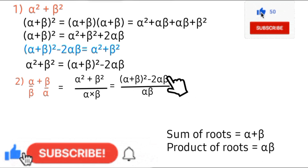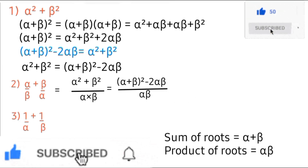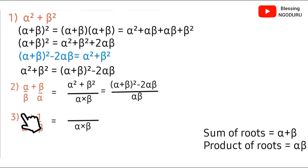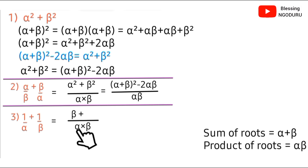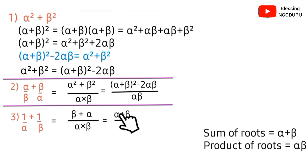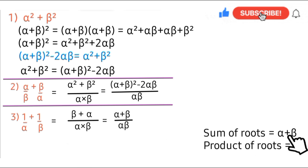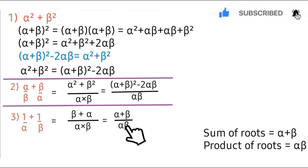Now let's derive the formula for 1/α + 1/β. Taking the LCM of the denominators, which is αβ: α into αβ leaves β, so β×1 gives β; β into αβ leaves α, so α×1 gives α. Therefore 1/α + 1/β = (α+β)/(αβ), expressed in terms of the sum of roots α+β and the product of roots αβ.